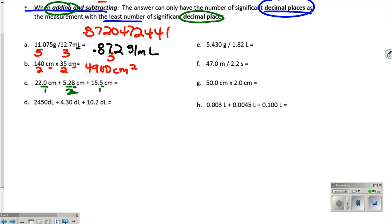So 22.0 plus 5.28 plus 15.5, the calculator gives us 42.78. We need that in one decimal place. So that's becoming 42.8. And centimeters plus centimeters plus centimeters is centimeters.